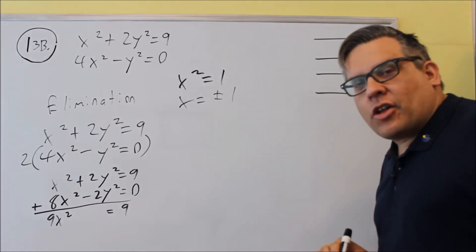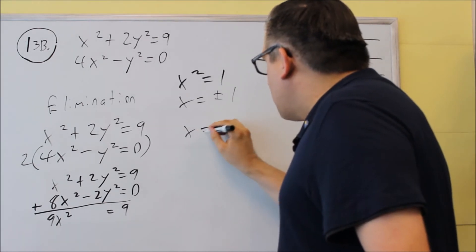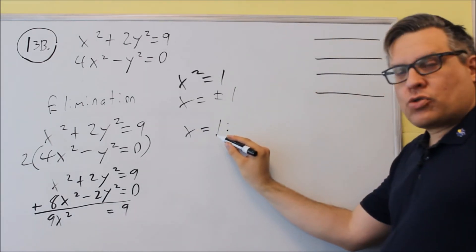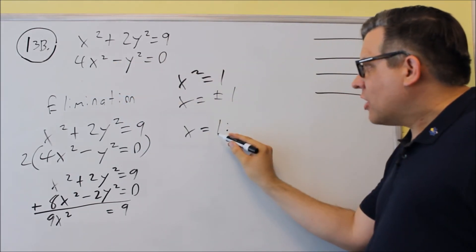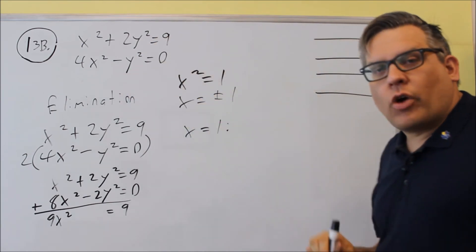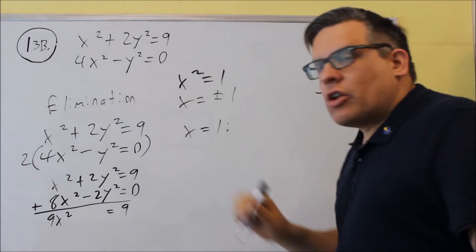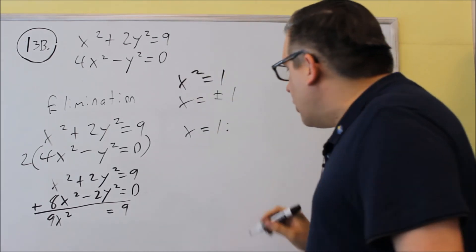Now I also want to find the corresponding y value. So we're going to do two different steps. We're first going to put in x is equal to one into this equation, and then I'm going to put x is negative one into that equation. Now you can use either one of these. I'm going to use the second equation since it looks a little bit easier, but I could also do the top one.